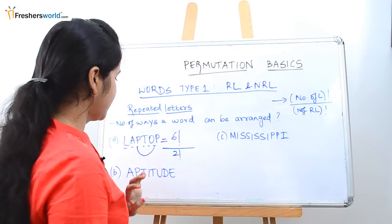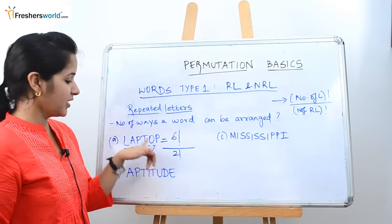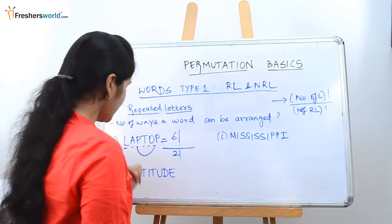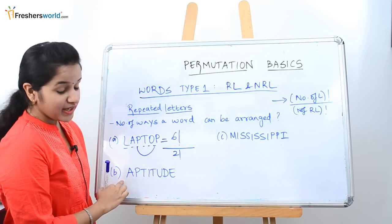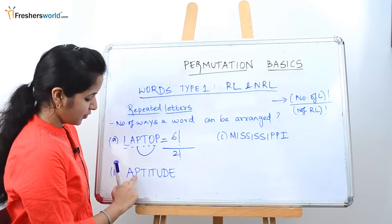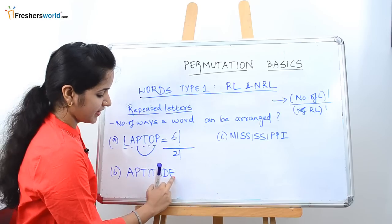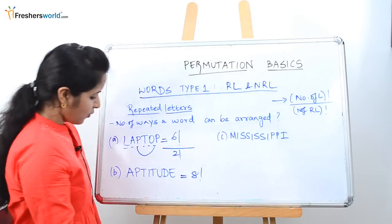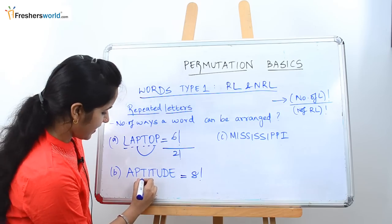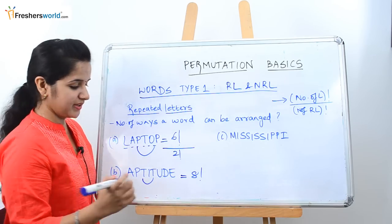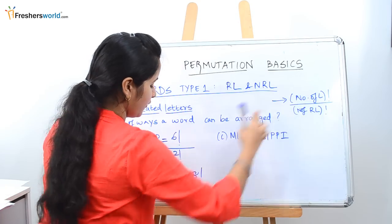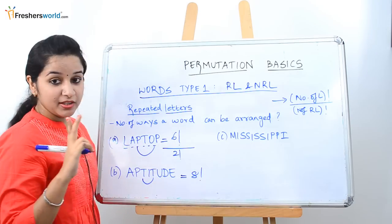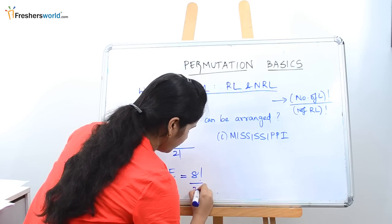Always remember this formula. Let's take another example: the word APTITUDE has eight letters, so eight factorial. What is repeated here? T is repeated twice. As per the formula, the number of letters is eight factorial divided by two factorial for the repeated letter T.